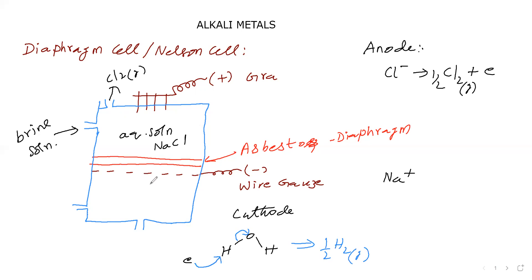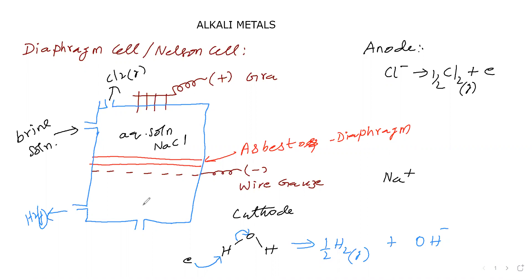Hydrogen gas is produced at the wire gauze cathode and comes out. Water undergoes reduction at cathode, giving hydrogen gas. The oxygen side receives the bond and becomes OH⁻. This OH⁻ comes down, and along with the Na⁺ that also comes down, we collect sodium hydroxide here.